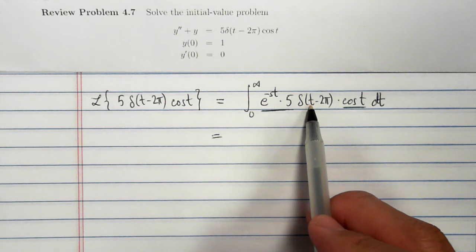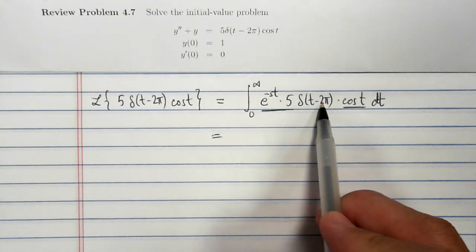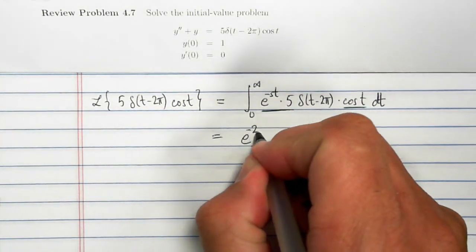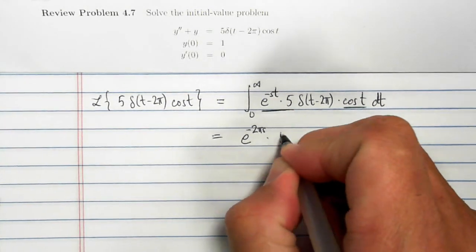This delta function has a spike when t is equal to 2 pi. So the value of this integral is going to be exactly what I get when I plug in 2 pi for t for everything else.